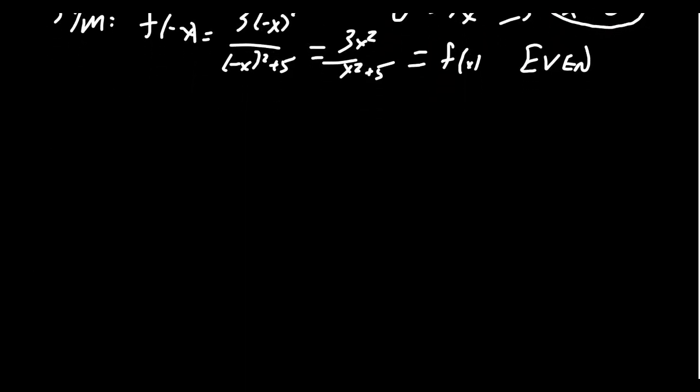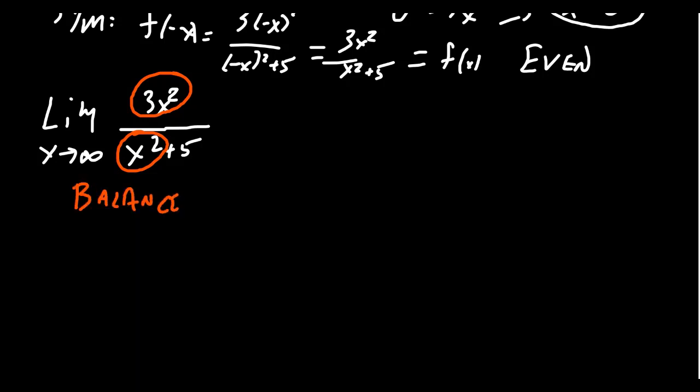In terms of end behavior, take the limit as x approaches infinity of our function 3x squared over x squared plus 5. When you have a rational function, to determine the end behavior, you want to think of who's the dominant term. Like, who's the fastest-growing function on the top and bottom? The numerator is only 3x squared, so that's what's going to be there. And on the bottom, you have an x squared as well. So, this is what we would call a balanced ratio. In terms of the end behavior, you only have to look at the leading terms. So, this will look like 3x squared over x squared as x goes to infinity.